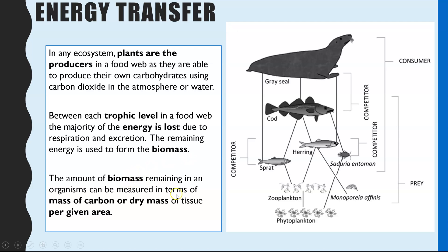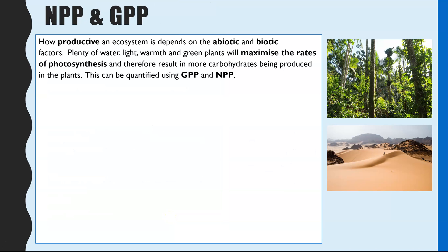The amount of biomass remaining in an organism can be measured in terms of the mass of carbon or the dry mass of tissue per given area. If asked how to work out the biomass of a plant, you'd need to remove all of the water to ensure it's just the dry mass. We measure per given area to allow a fair comparison between different sized organisms.